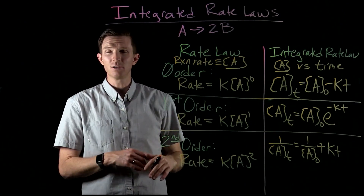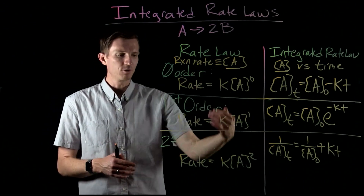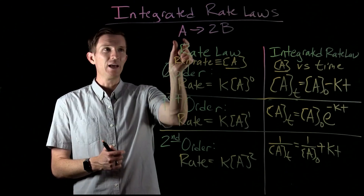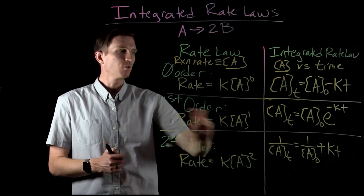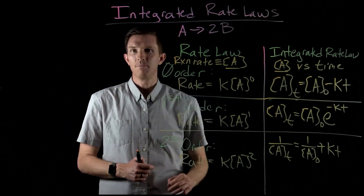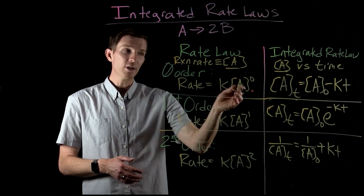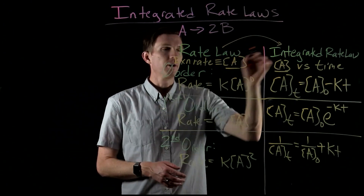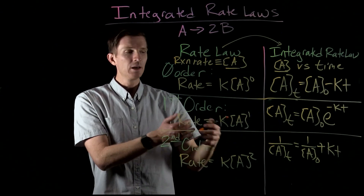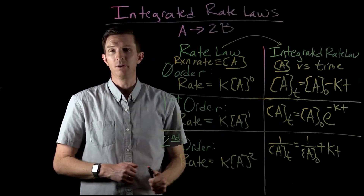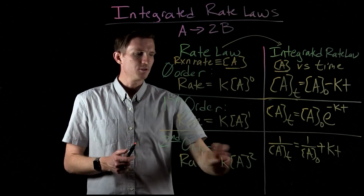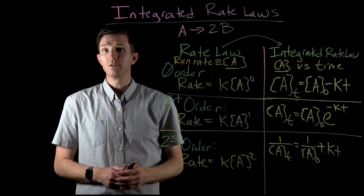To clarify: this is not saying a single reaction can be zero, first, and second order in different circumstances. These are different reactions — I just used the generic reaction A goes to 2B. If A were zero order, it would have a linear relationship over time. If first order, it would have an exponential relationship. If second order, it would have the one-over-A relationship. The dependence or independence of concentration on rate affects what our integrated rate laws are, showing the direct connection between rate and how concentration changes over time. In class, we'll look at calculations applying these integrated rate laws to rate law expressions.